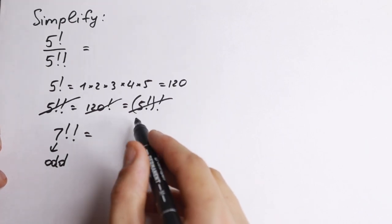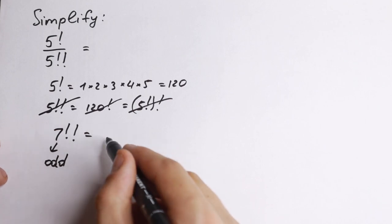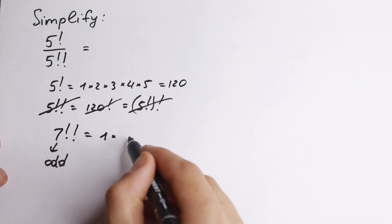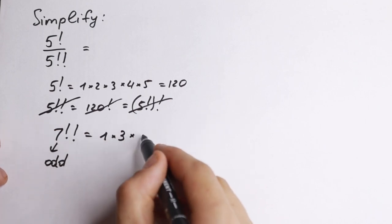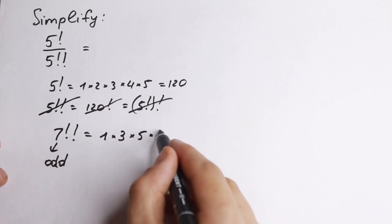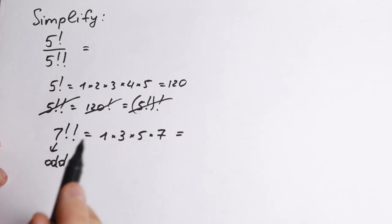So 7 with double factorial, we go to this 7 only with odd numbers. So we have 1, then we have 2, we don't need it. We have 3, we don't need 4. We need 5, we don't need 6. We need 7. And this is 7 with double factorial.